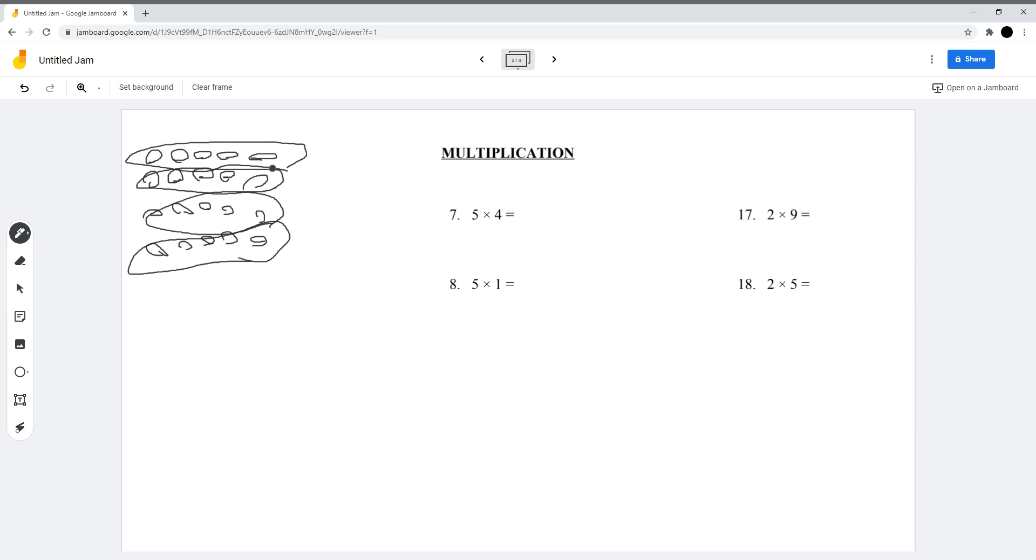And if you count this: 1, 2, 3, 4, 5, 6, 7, 8, 9, 10, 11, 12, 13, 14, 15, 16, 17, 18, 19, and 20. The answer is 20.